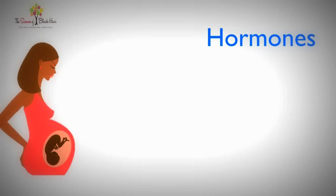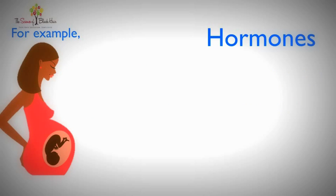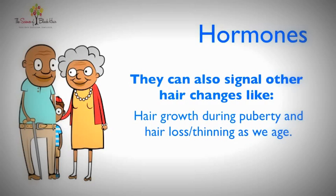A good example of hormones affecting our hair growth occurs during pregnancy. During pregnancy, our hormones lock our hair in the anagen or growing phase. Once the baby is delivered, all of those hairs quickly revert into telogen and exogen phases and our hair begins to shed like crazy — that's the phenomenon we call postpartum shedding. Hormones can also signal changes at other important moments in your life, like rapid hair growth in once-hairless areas during puberty, and hair loss and thinning as we age.